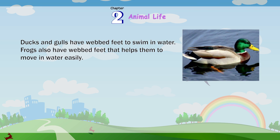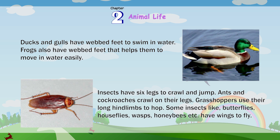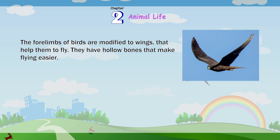Ducks and gulls have webbed feet to swim in water. Frogs also have webbed feet that help them to move in water easily. Insects have six legs to crawl and jump — ants and cockroaches crawl on their legs, while grasshoppers use their long hind limbs to hop. Some insects like butterflies, houseflies, wasps, and honeybees have wings to fly. The forelimbs of birds are modified into wings that help them to fly, and they have hollow bones that make flying easier.